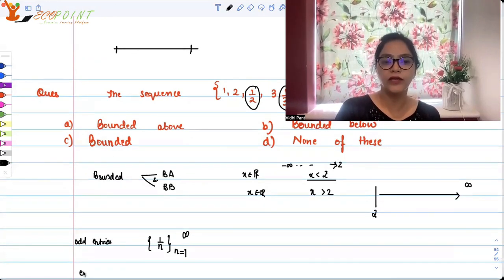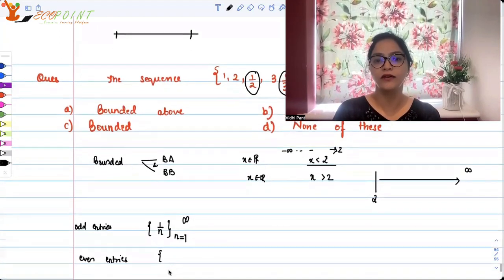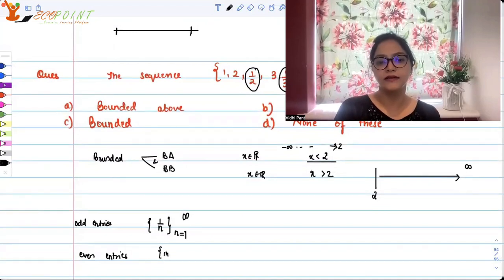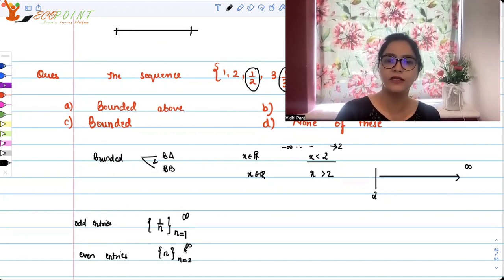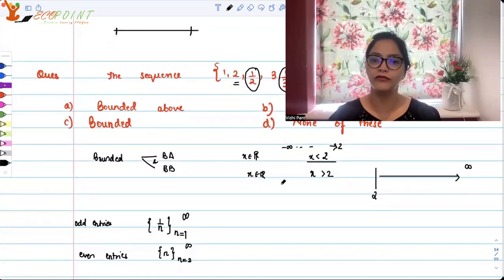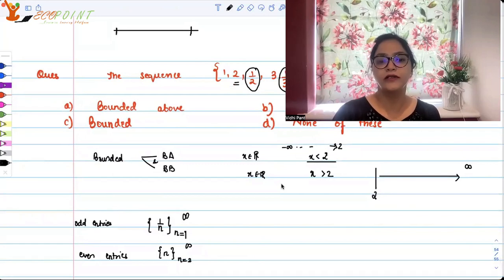Now, if you look at your even entries, even elements that you have, that's like just putting n, where n starts from two to infinity. Because the even entries we are taking from here. So two, three, then would be four, so on and so forth, right?